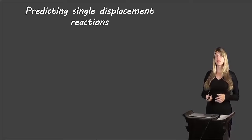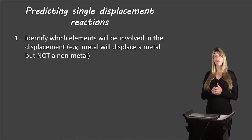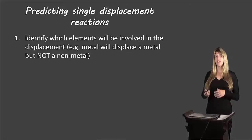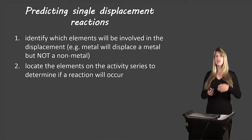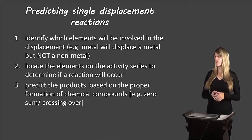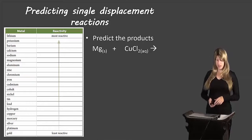To predict single displacement reactions: first, identify which elements will be involved in the displacement — metals can displace other metals, halogens can displace other halogens, and sometimes a metal can displace hydrogen in an acid or water, but a metal cannot displace a non-metal. Second, locate the elements on the activity series to determine if a reaction will occur — the displacing element must be higher on the series. Third, predict the products based on proper formation of chemical compounds, using the zero sum rule or crossing over rule.